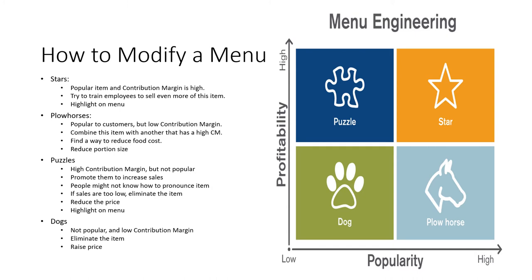How do we take these different menu item classes and modify them on the menu? Stars are already popular items with a high contribution margin. There's not much we have to do, but we can train employees to sell even more of this item to make it even more popular, and highlight it on the menu. Plow horses are popular to customers but low on contribution margin. To fix this, we can combine this item with another item that has a high contribution margin, find a way to reduce food costs, and even reduce the portion size.